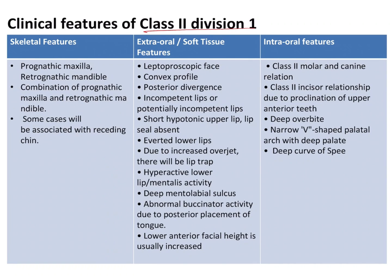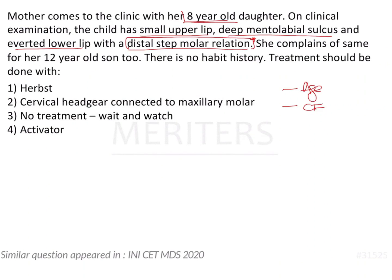The child has a short upper lip, averted lower lip, and deep mentolabial sulcus. These clinical features are very important to note. You need to know the skeletal features as well as the extra-oral and intraoral features of all the different types of malocclusions. In case-based questions, they will give you clinical features and you have to identify and diagnose the clinical condition — they will not directly tell you the malocclusion.